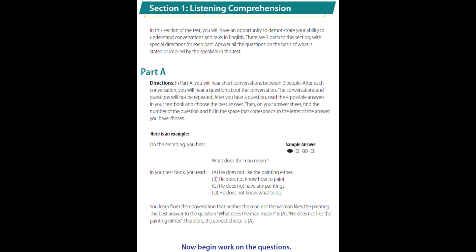Here is an example. On the recording, you hear: 'I don't like this painting very much.' 'Neither do I.' What does the man mean? In your test book, you read: A. He does not like the painting either. B. He does not know how to paint. C. He does not have any paintings. D. He does not know what to do. You learn from the conversation that neither the man nor the woman likes the painting. The best answer to the question 'What does the man mean?' is A: He does not like the painting either. Therefore, the correct choice is A.